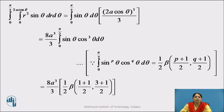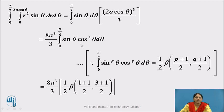Here, (2A)³ upon 3, that is 8A cubed upon 3, is a constant and can be taken outside the integral. Therefore, we can write it as 8A cubed upon 3 times integration from 0 to pi by 2 of sin theta times cos cubed theta d theta.